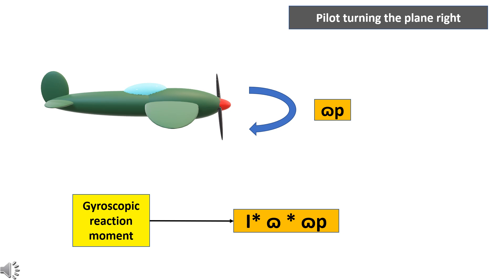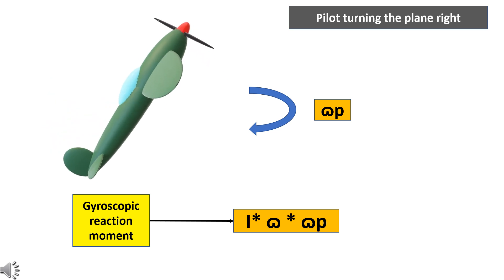Remember, the gyroscopic effect happens immediately during the turn itself. That is, when the aircraft is turning right, it also moves the nose up and the tail down at the same time. So, this gyroscopic effect must be taken into account during turning of the aircraft.